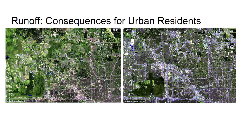Here, you can see the scale of overdevelopment that has occurred in Houston over the past 30 years. Within this time period, Houston lost approximately 70% of its wetlands. Houston received over 40 inches of rain within a short period of time due to Hurricane Harvey, and these images show that that amount of water did not have many places to drain.